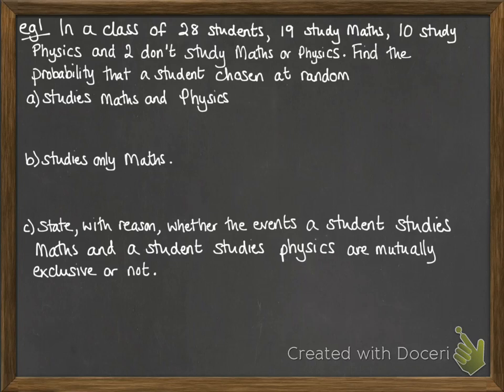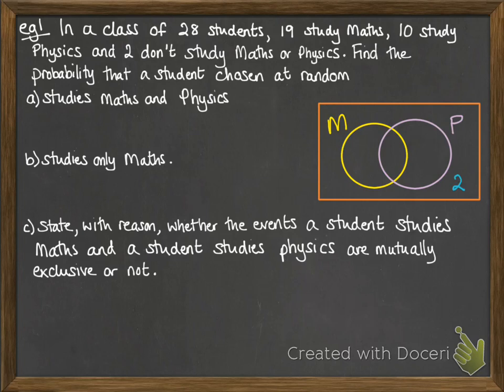Okay, here we have this example. 28 students, 19 study maths, 10 study physics, 2 don't do either of them. So let's set up a Venn diagram. Take that 2 out first of all, and we've got 26 left that do maths or physics.